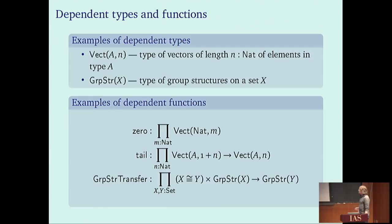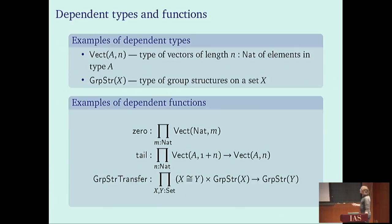What is the particularity of dependent types? The purpose of dependent types is to write dependent functions. For instance, we could consider 'Vect A n', a type of vectors of length n, where n is a natural number and elements are taken from A. Another example of a dependent type would be 'GroupStructure X', the type of group structures on a set X. Once we have these types, we can write dependent functions using them.